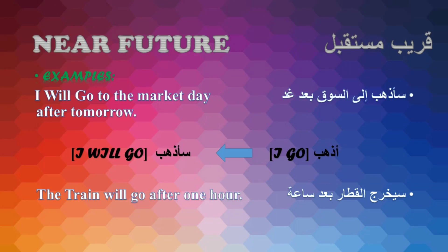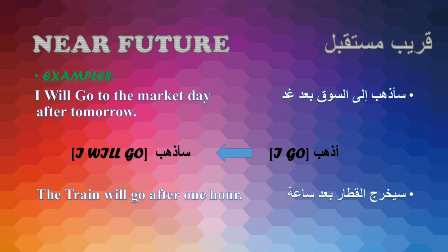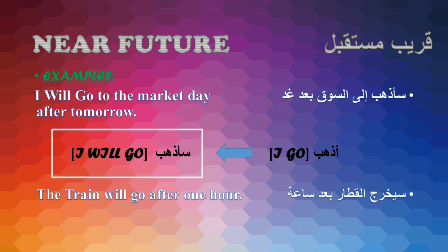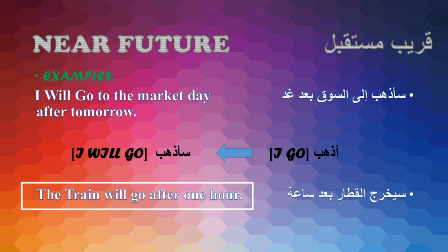We will learn near future and distant future through some examples. Sa'az-habu ila as-suq li-ba'd ghadan — I will go to the market day after tomorrow. Here, 'seen' is added before 'az-habu' to convert it into near future, mustakbil karib. Sa'az-habu ila as-suq li-ba'd — The train will go after one hour.